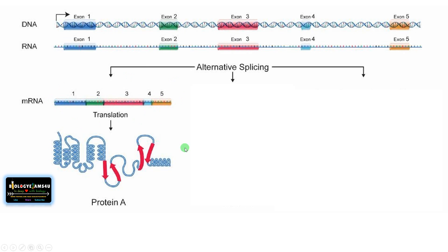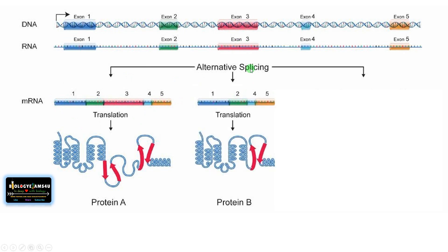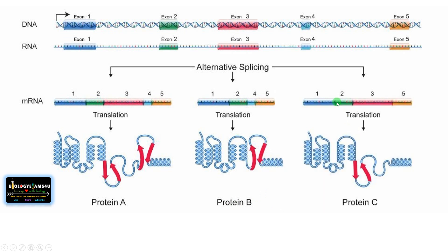There are other possibilities. Sometimes exons 1, 2, 4, and 5 are joined — meaning the third exon is removed — giving a different protein B with slight variation. In some cases it will be exons 1, 2, 3, and 5, with the fourth exon deleted or removed, yielding yet another different protein. So from the same DNA sequence we can get different, related proteins.